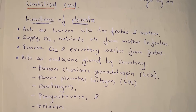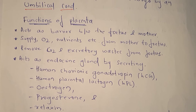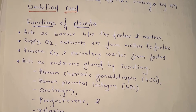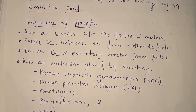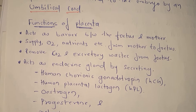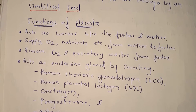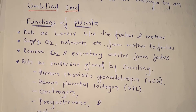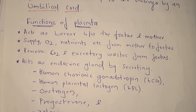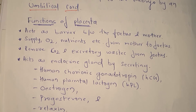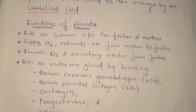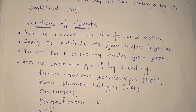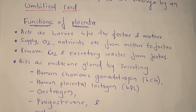Placenta supplies oxygen, nutrition, and many other things from the mother to the fetus. Fetus refers to the developing baby inside the mother's womb. The placenta supplies food, water, and oxygen to the developing baby (fetus). / प्लासेंटा माँ के पेट में पल रहे बेबी को खाना, पानी, और oxygen supply करने का काम करता है।